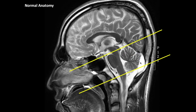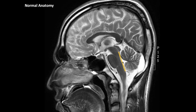Regarding the height of the vermis, it usually extends from the intercollicular level to the level of the obex, and this is the normal height of the vermis. A line is drawn between the obex and the aqueduct, and normally the fastigial point should lie in the mid portion of this line.